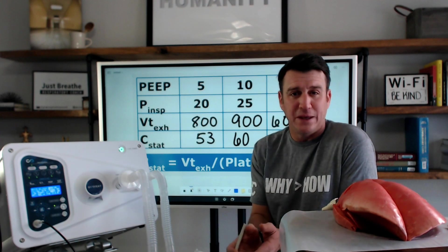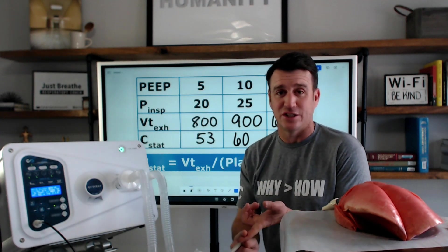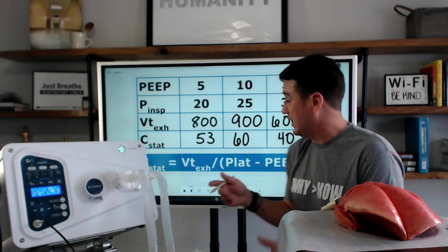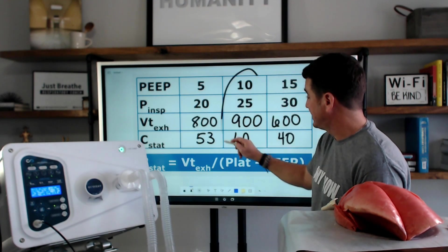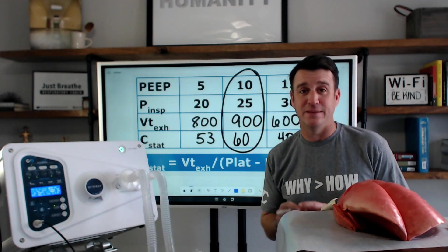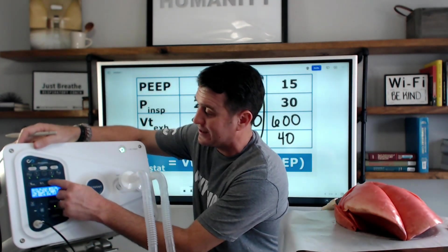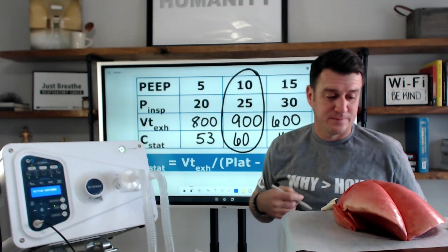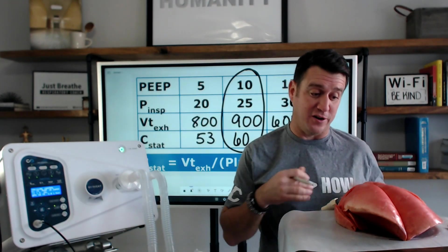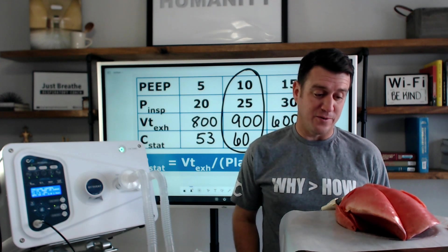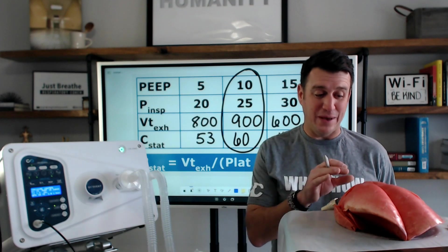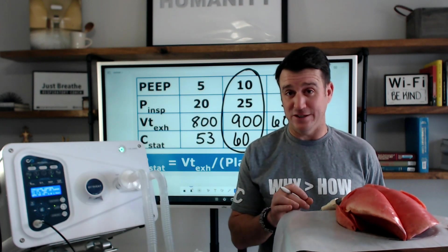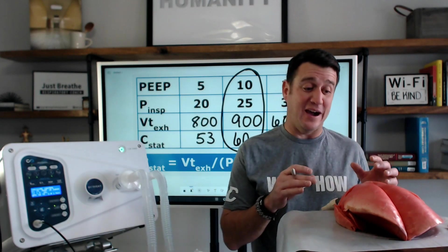Other things that come in to optimal PEEP if you want to use that term is where is your best oxygenation with your best compliance with your minimal cardiac effects. We can't assess cardiac effects right now, but based off of this chart, I think we can all agree that this level right here is the best PEEP that we should be shooting for. If I turn my PEEP back to 10, I want you to notice what happens. You're going to see them relax a little and they're actually going to fall. Right there. That is the best baseline pressure, positive end expiratory pressure, that leads to the best compliance for our patient.